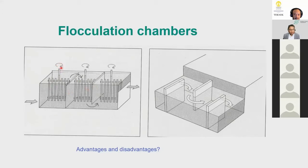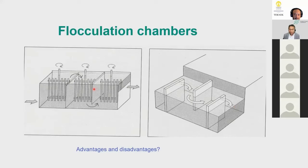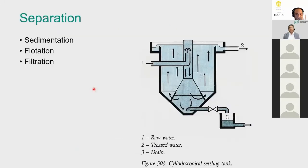Instead of paddle flocculators, some treatment plants have adopted channeled flocculators: walls are arranged so water first flows faster through narrower gaps, then progressively slower as the gaps widen, emulating the flocculation chamber effect. This design has become much more common. After flocculation, water containing flocs must be separated — there are three separation methods: sedimentation, flotation, and filtration.